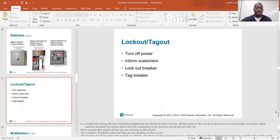Lockout, tagout. In a residential setting, the first step before beginning any electrical work is to turn off the power to the circuit at the service entrance panel. Any other safety switches between the service panel and the component to be serviced should also be shut off. Never assume that anyone knows you are working on the circuit. The customer should be informed that you are working on the circuit.